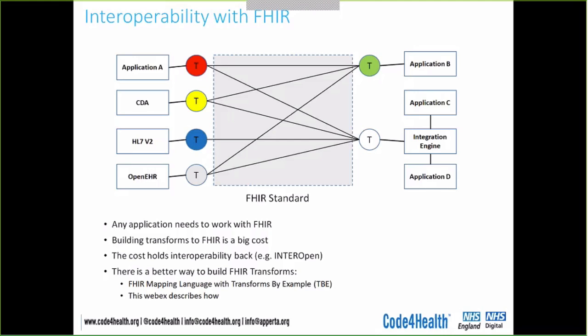For FHIR to succeed as an intermediary language, people are going to have to build a lot of transforms to all existing healthcare applications. Building those transforms is quite a big cost item — you have to understand your legacy source data, understand the FHIR representation, and build transform software between the two, possibly in both directions. This cost is holding interoperability back, and it's probably holding the work of INTEROpen back, as members find the cost of building FHIR interfaces quite prohibitive.